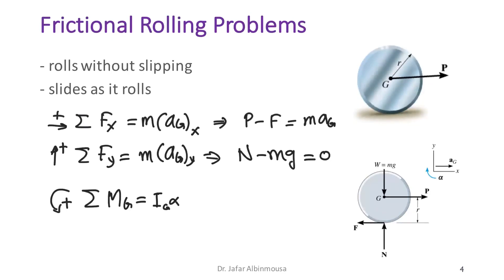The only moment-producing force is friction, so we have friction multiplied by the perpendicular distance r, which equals I_G·α.